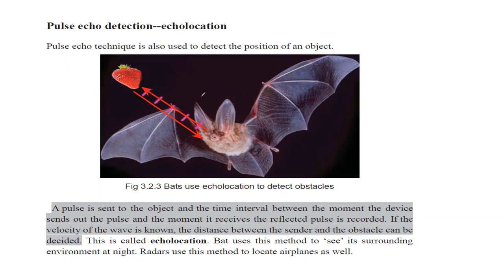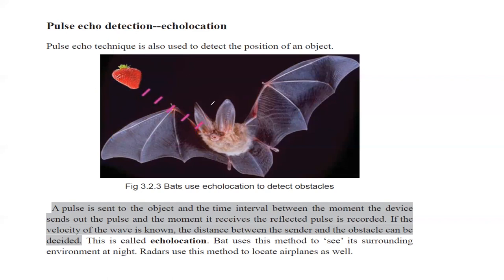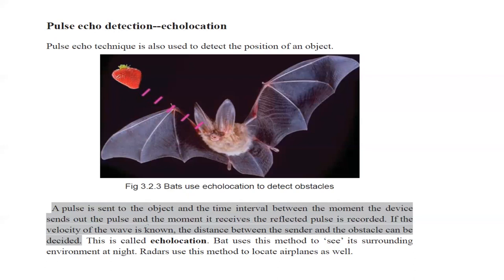Longer wavelengths diffract more, spreading out instead of reflecting. Shorter wavelengths or higher frequencies mean most of the radiation bounces back. A pulse is sent to the object, and using the time interval between sending and receiving the pulse, along with the known wave speed, the distance to the obstacle can be calculated. This is called echolocation — bats use it to navigate at night and radar uses it to locate aircraft.